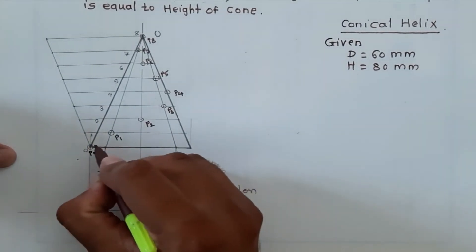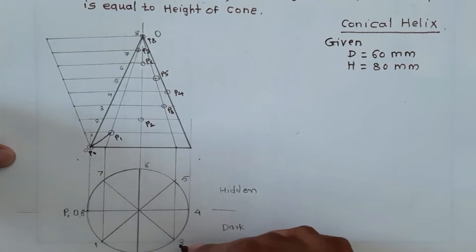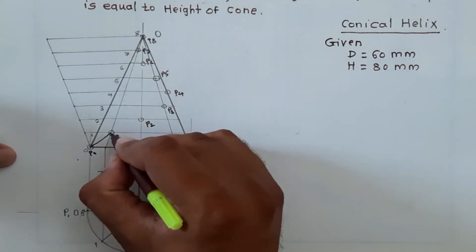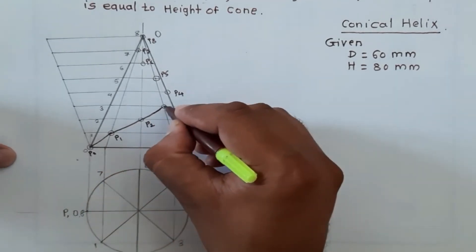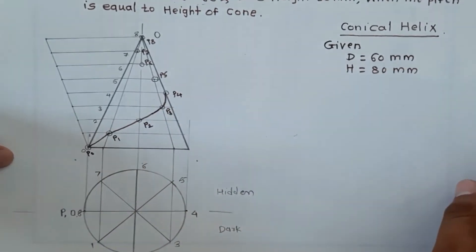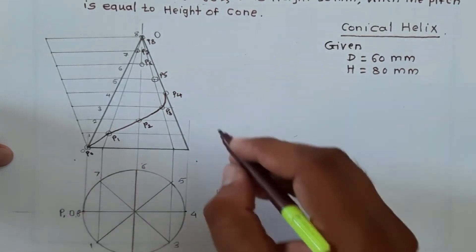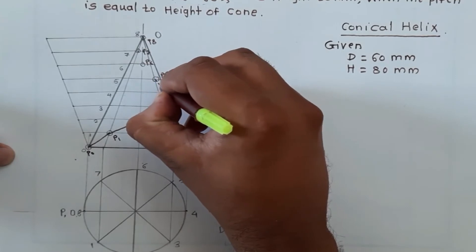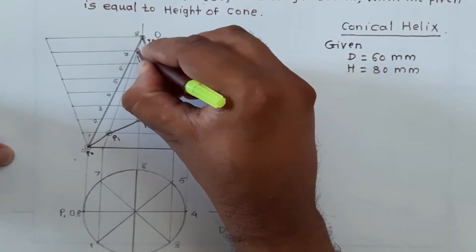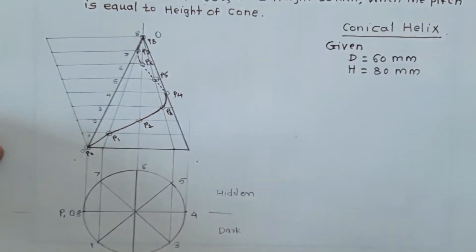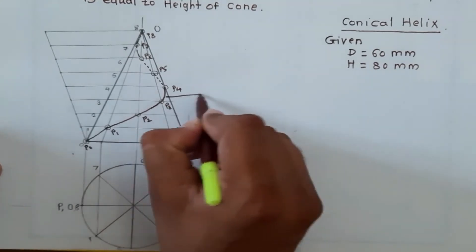Now I will join these points. P0 to P1 is dark, P1 to P2 is dark, P2 to P3 is dark, P3 to P4 is dark. After P4, all points will be dotted because they are behind the circle: P4 to P5 is dotted, P5 to P6 is dotted, P6 to P7 is dotted, and P7 to P8 is dotted. Likewise, our helix is completed.